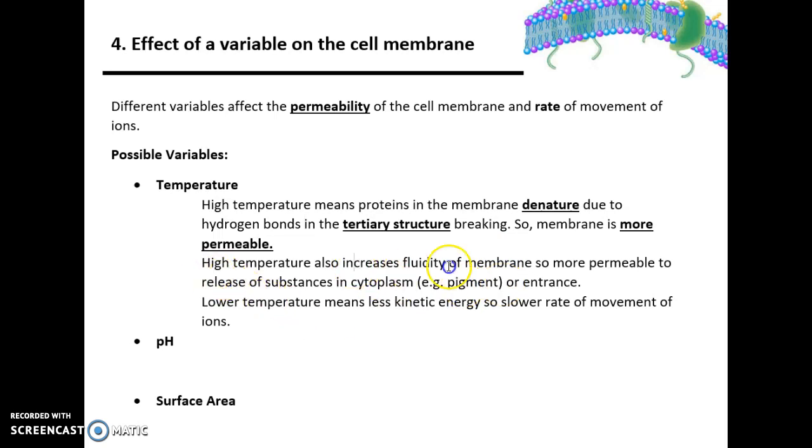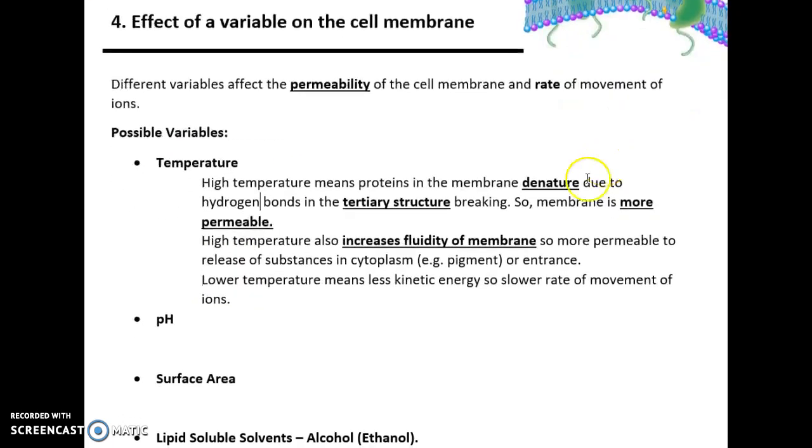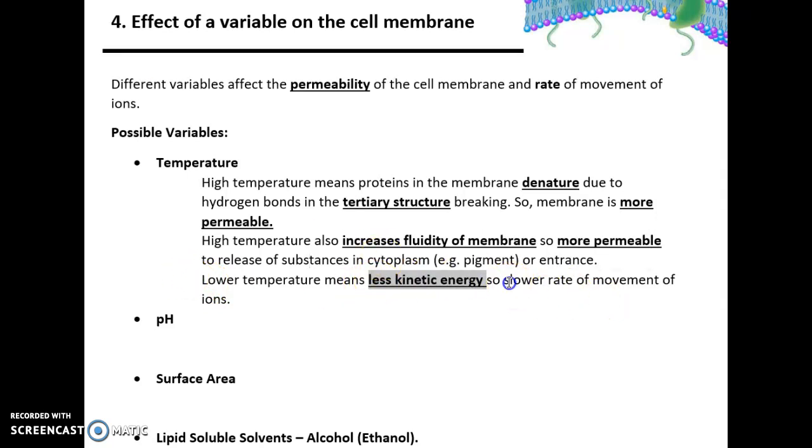Furthermore, high temperatures increase the fluidity of the membrane because inside the membrane there is cholesterol, so the fluidity increases. The membrane is more permeable to the release of substances in the cytoplasm such as pigment. Lower temperature means less kinetic energy, so a slower rate of movement of ions. If a question asks about higher temperatures, the answer is the denaturing answer. If it's about lower temperatures, it's the answer based around the idea of less kinetic energy.